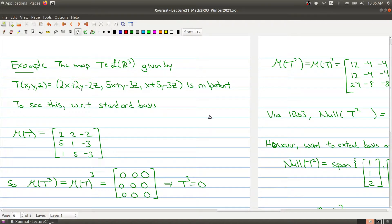Welcome to part 4 of lecture 21. So just a quick recap of what we're doing is we're looking at a particular example of a nilpotent operator. And we're trying to find a basis so that we can see that the associated matrix is upper triangular with zeros all down the diagonal.